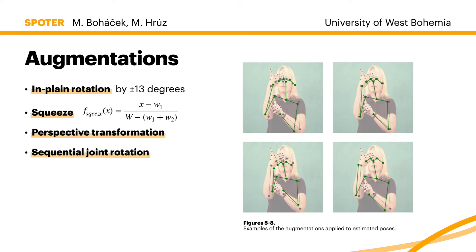This is followed by augmentations. The first is in-plane rotation, where all joint coordinates are rotated by a random angle up to 13 degrees. The second is a squeeze, where all frames are squeezed from both horizontal sides by shrinking the lateral edges. The third is perspective transformation, where we simulate recording signs from different tilts and angles by projecting joint coordinates onto a new plane. The last is sequential joint rotation, where both arms are passed successively and each landmark is slightly rotated with respect to the current one, simulating slight negligible variances in each execution of a sign.